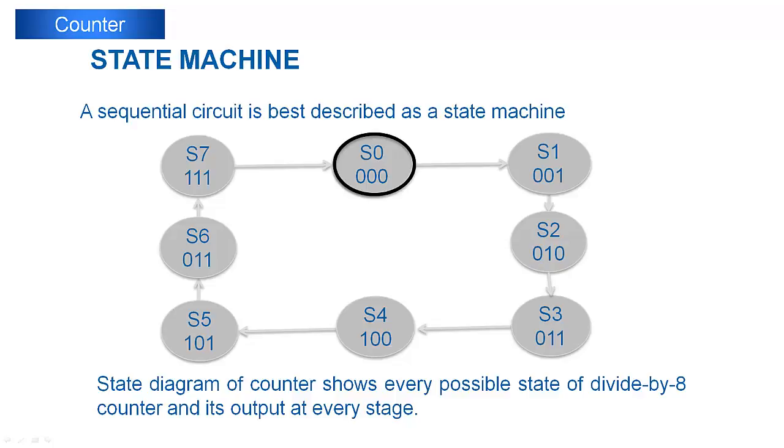This 3-bit counter state machine start with state S0 with output 000 and move to state S1 with output 001 when it find first input event. At the second input event, it moves to state S2 with output 010 and so on until it reaches the final state S7. If it find further input at state S7, the counter will roll over to state S0.